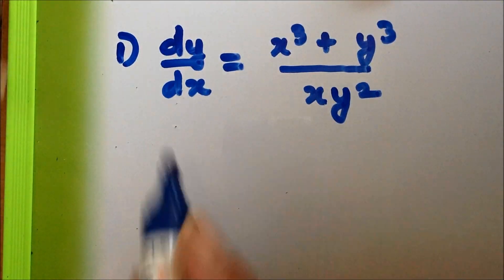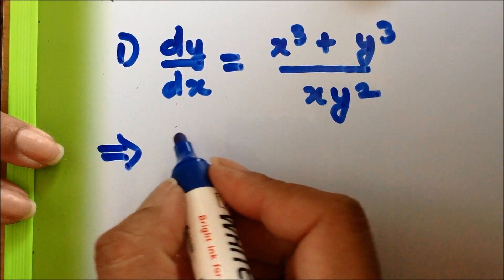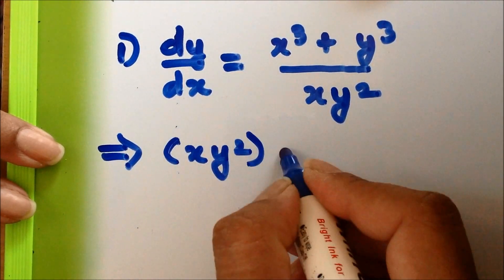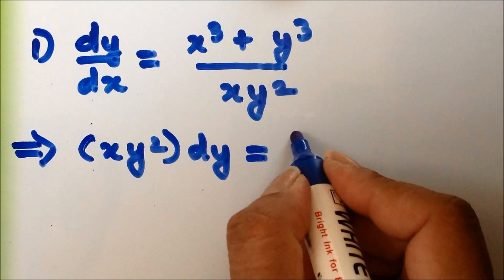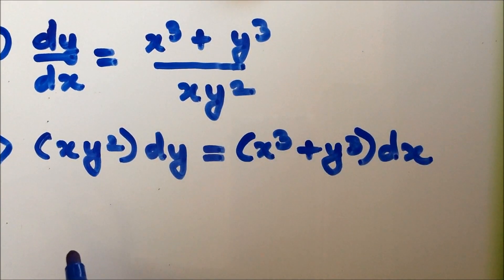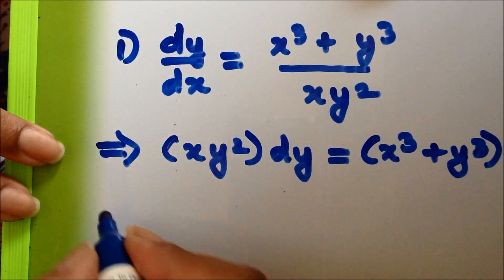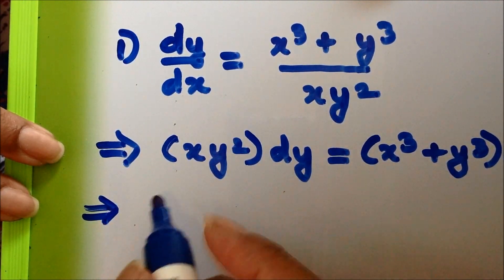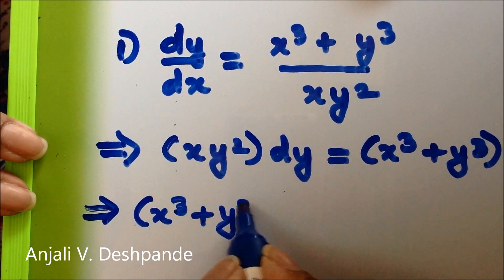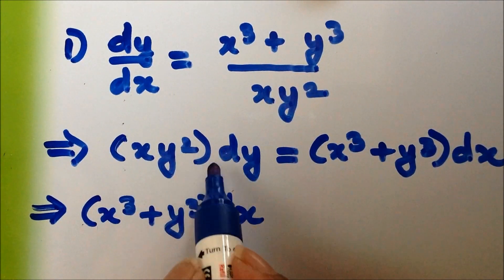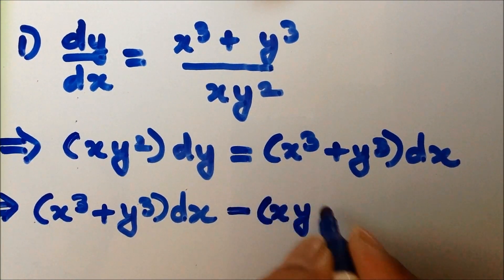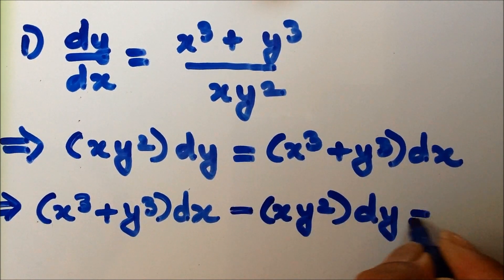I am going to rearrange the terms and write this equation as: xy² dy = (x³ + y³) dx. Then further rearranging, I shift the term to the other side to get: (x³ + y³) dx minus xy² dy = 0.